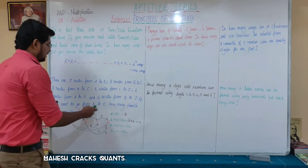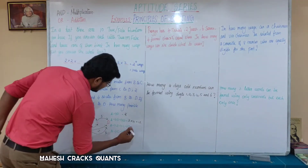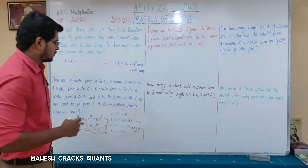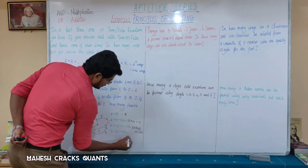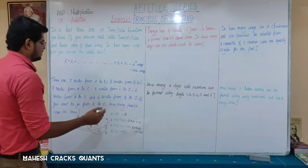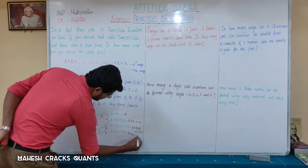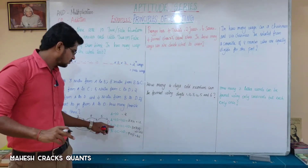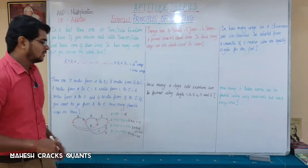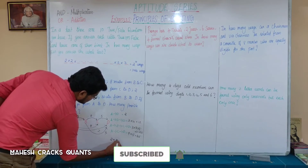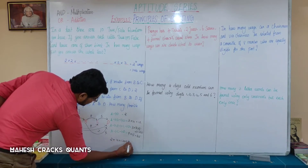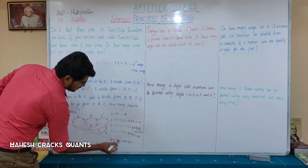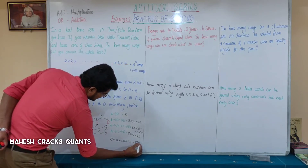A to C is nine ways, and C to D is five. Nine into five is forty-five ways. Now total: add all routes. Two plus twelve is fourteen. One twenty plus forty-five is one sixty-five. One sixty-five plus fourteen is one seventy-nine. So from A to D, there are one hundred and seventy-nine possible routes.